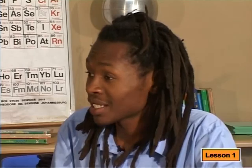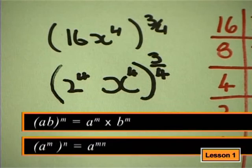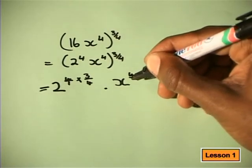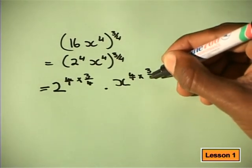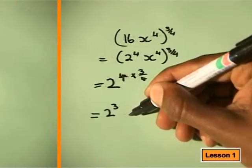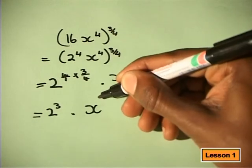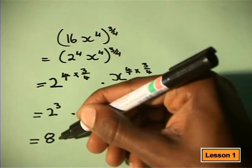Thanks. That really makes it a lot easier to work with. Now, if two bases are all raised to a common power, then both bases take the power. Also, if you raise a power to a power, you multiply the powers. So, we get 2 to the power 4 times 3 over 4, and x to the power 4 times 3 over 4. If we simplify the powers, we get 2 to the power 3 times x to the power 3, which is 8x cubed.